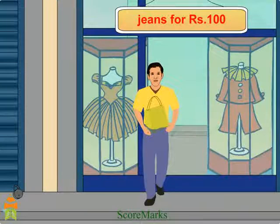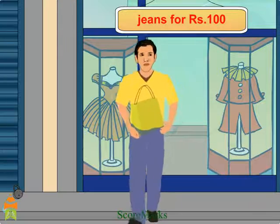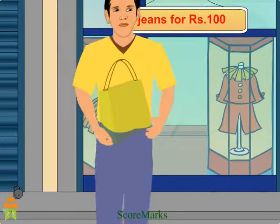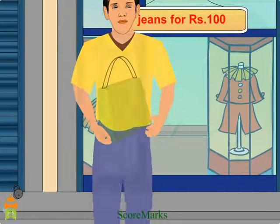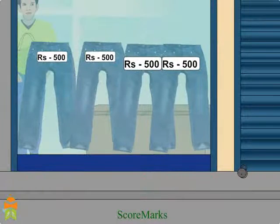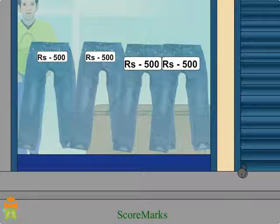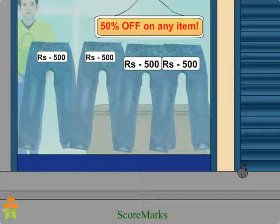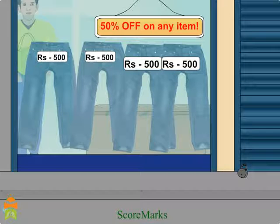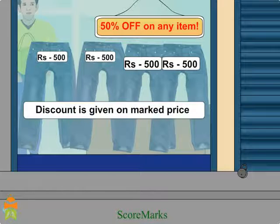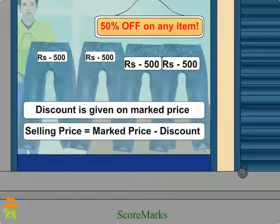Now let's see another example. Amit went to a jeans store. He bought a jeans for Rs.100, then put a new tag on it of Rs.500 and put a huge poster outside his shop: '50% off on any item.' Here Rs.500 is the marked price. Discount is given on the marked price. Selling price is equal to marked price minus discount.